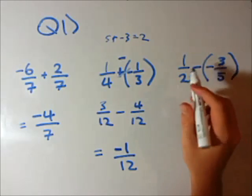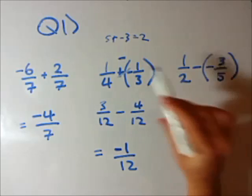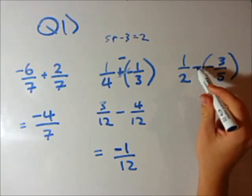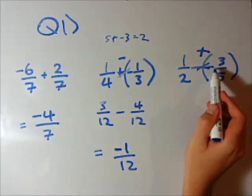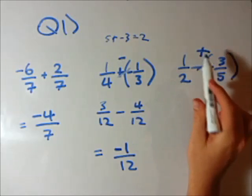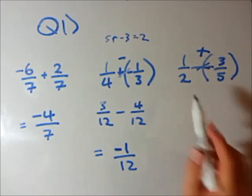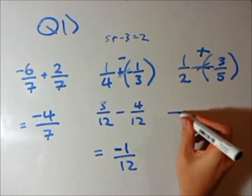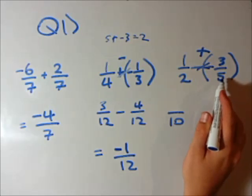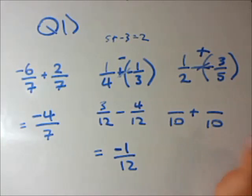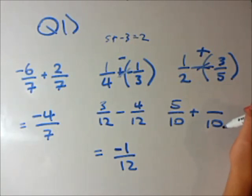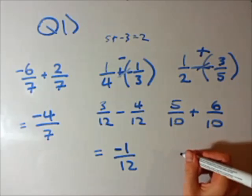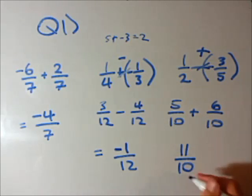Last one: 1 over 2 minus negative 3 over 5. Just like in integers, a minus minus turns into a plus. So we're left with 1 over 2 plus 3 over 5. Denominators aren't the same — the lowest common multiple is 10, because 2 goes into 10 and 5 goes into 10. We times the top of 1/2 by 5 to get 5, and 3 times 2 is 6. So 5 plus 6 is 11 over 10, and there is our answer.